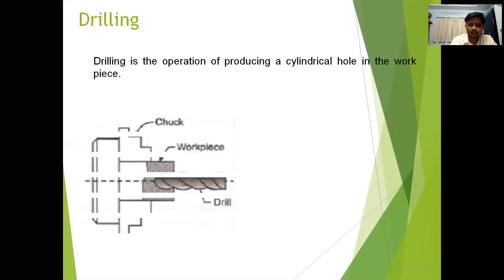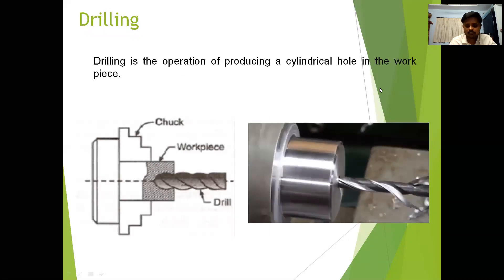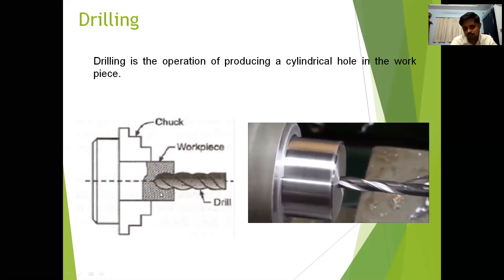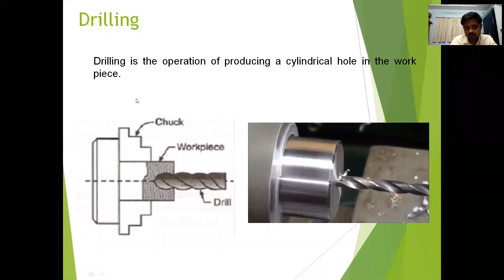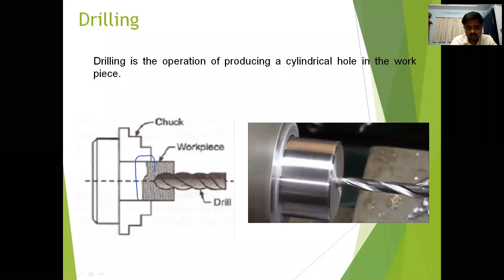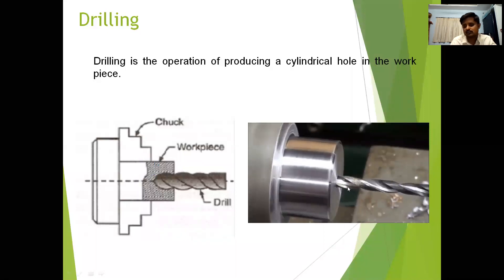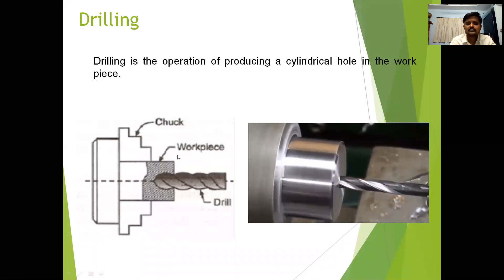Next one is drilling. Drilling is the operation of producing cylindrical holes in the workpiece. You can perform the drilling operation on a lathe machine also. The drill bit is fixed in the tailstock and the workpiece is held in a chuck. The workpiece is going to be revolving, and we move the drill bit towards the rotating workpiece by advancing the tailstock. The material is removed from the workpiece as the drill bit moves in.